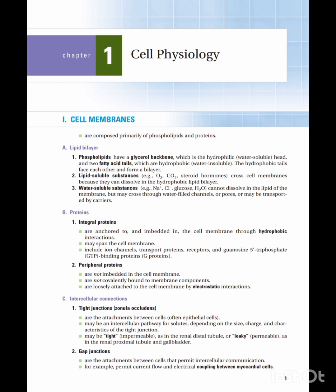Now let's talk about the proteins embedded in this lipid bilayer. These are of two types: integral proteins and peripheral proteins. Integral proteins are also known as transmembrane proteins because they span the entire cell membrane. They are anchored and embedded in the membrane through strong hydrophobic interactions. Examples include ion channels, transport proteins, receptors, and G proteins.